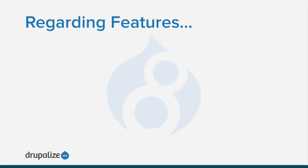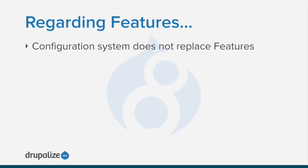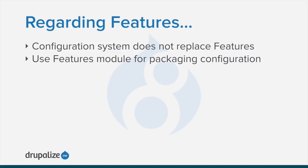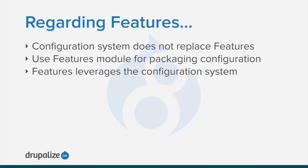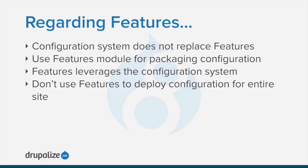Because the contributed module Features was used so extensively in Drupal 7 to move configuration changes from dev to live, it's a common misconception that configuration management in Drupal 8 works in a similar fashion and thus replaces the Features module. But this is not the case. The Features module enables you to package configuration into modules that you can install or uninstall on another site. For example, if you had a great set of configuration for a blog, you could use Features to package that configuration. While Features leverages the configuration system in Drupal 8, it is meant to package configuration, not deploy configuration for a whole site.